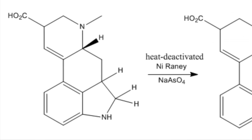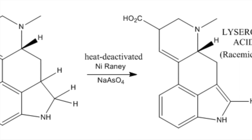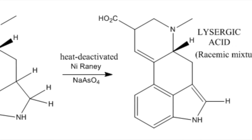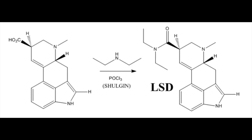The compound is finally oxidized, giving a racemic mixture of lysergic acid. To finally obtain LSD, diethylamine is added to form an amide, thus forming LSD, and concluding the total synthesis.